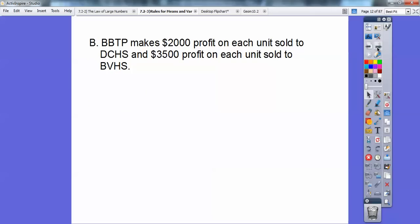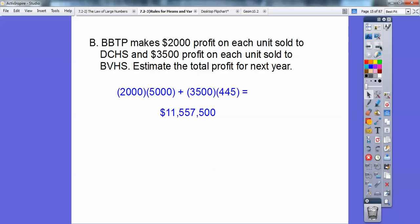So now BBTP, now we're being told that they make $2,000 profit on each unit sold to DCHS and 3,500 profit on each unit sold to BBHS. So estimate the total profit for next year. Well that's easy enough. You just multiply the 2,000 times the average amount, so 5,000, and then 3,500 times the other average amount. And you find out how much profit they made, $11,557,500. Gosh, who is that BBTP, by the way?